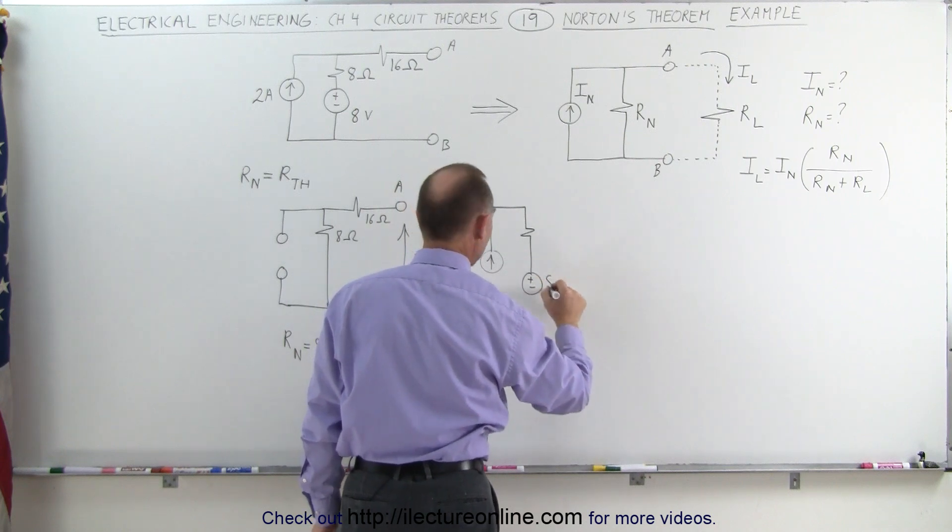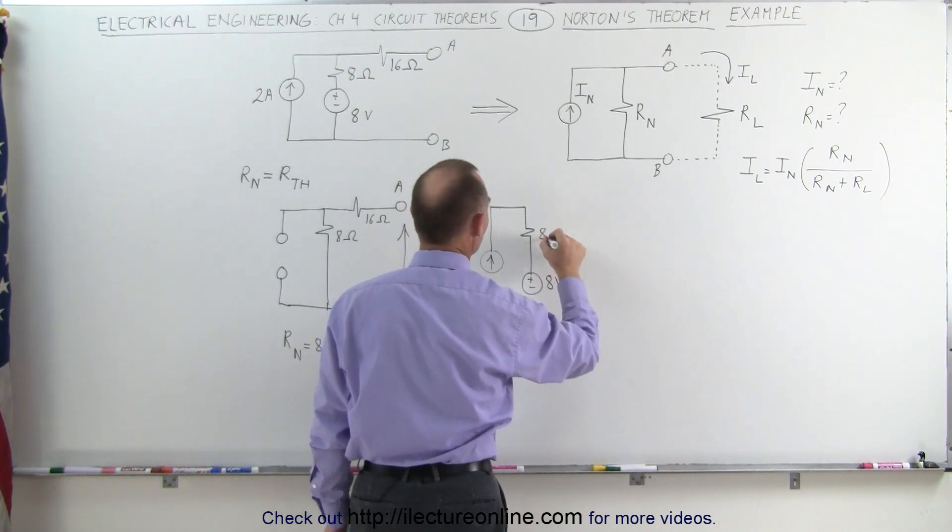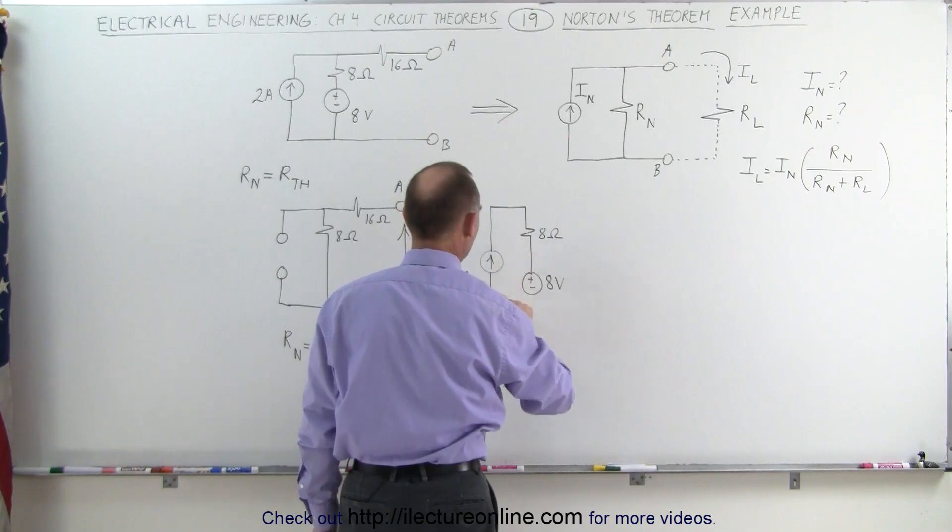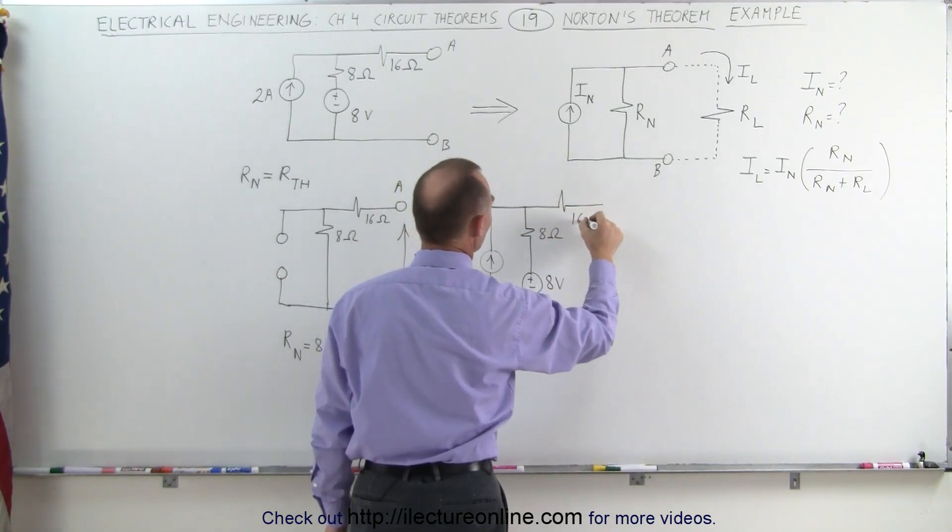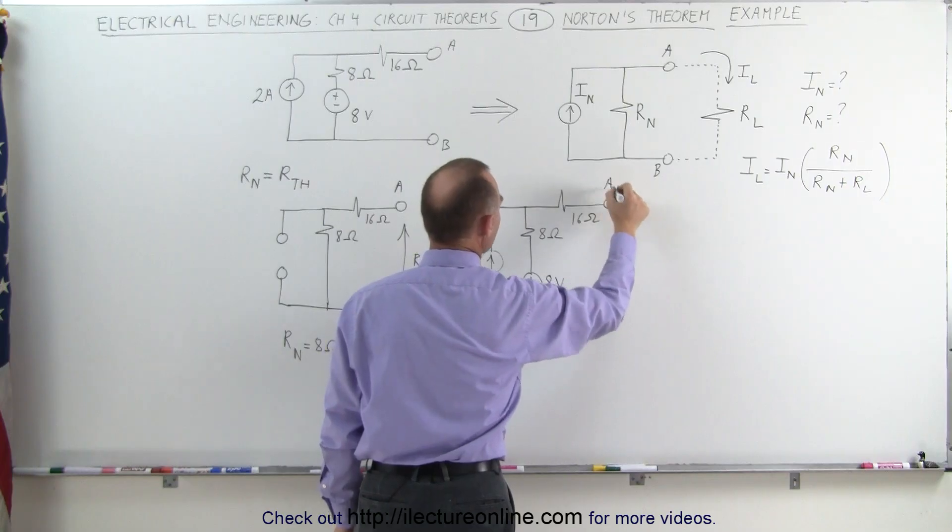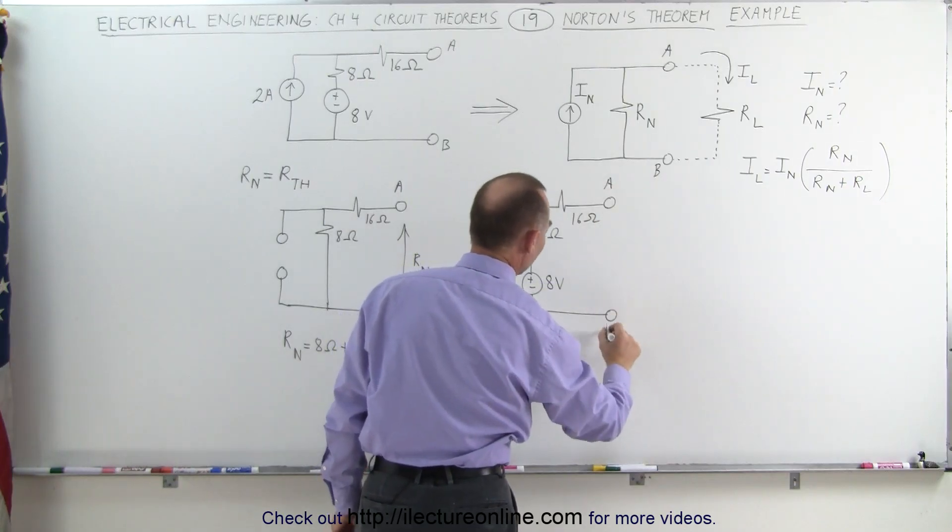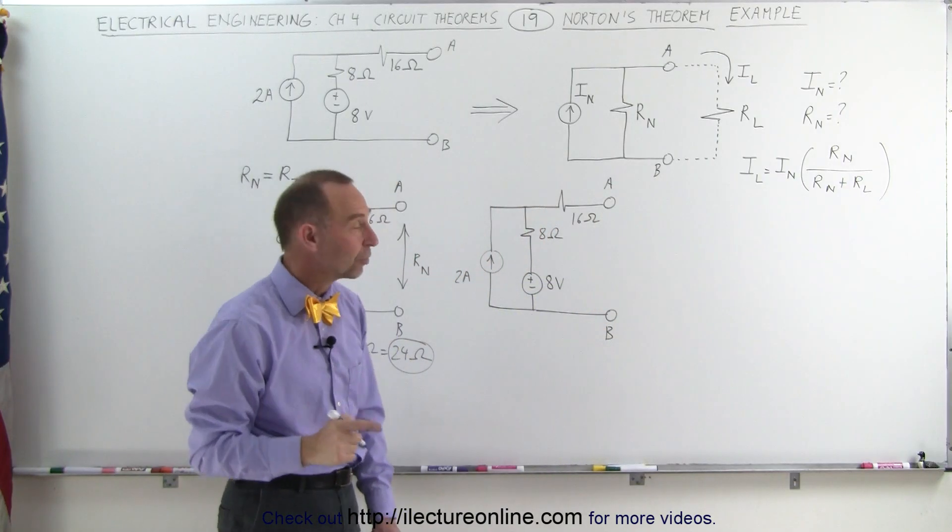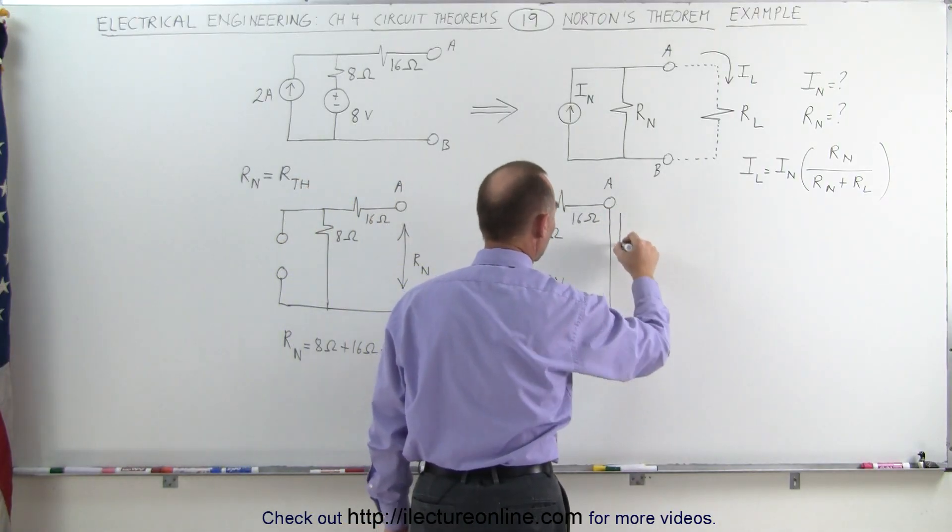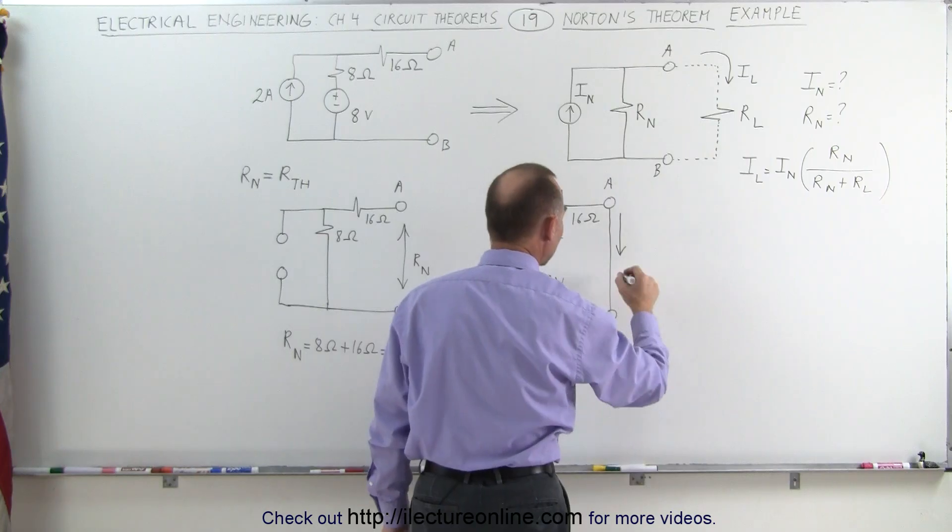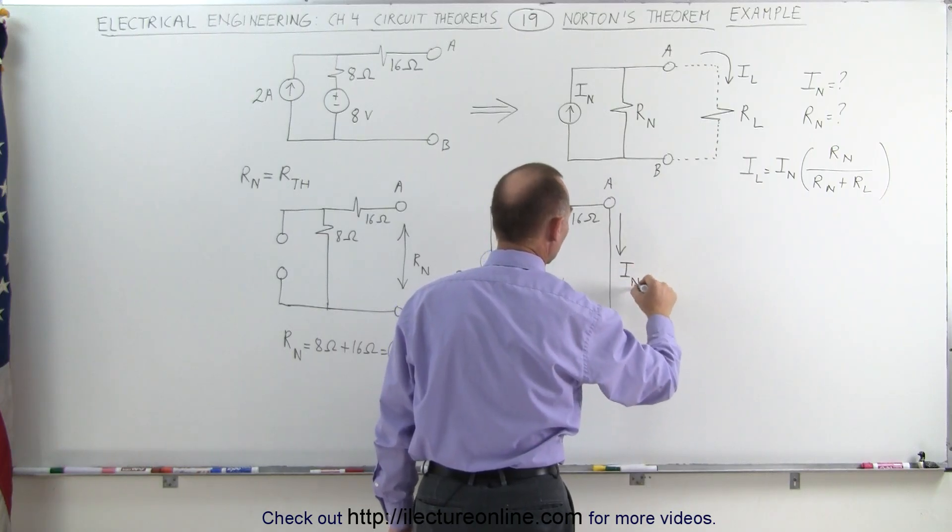the 12 volt, not 12 volt, it's 8 volt voltage source, this is an 8 ohm resistor, there's a 2 amp current source, we have the 16 ohm resistor here, terminal A and terminal B. To find the Norton current we have to short out the terminals A and B and then whatever current we will have between A and B, that will become Norton current.